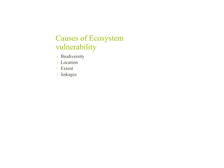There are four different causes of ecosystem vulnerability: biodiversity, location, extent, and linkages. Biodiversity refers to genetic diversity, species diversity, and ecological diversity. Generally, the greater the biodiversity, the less vulnerable the ecosystem.